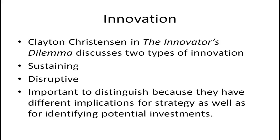I want to talk about the concept of innovation. Now we're all familiar with the concept of innovation — products get better, new products get offered — but we generally just consider that as a standard thing that happens. Products get better, the iPhone gets better, the computer gets better. But Clayton Christensen in 1997 published a book called The Innovator's Dilemma, in which he discussed two different types of innovation: sustaining and disruptive. It's important to distinguish between these two because they have different implications for strategy as well as for identifying investment opportunities.